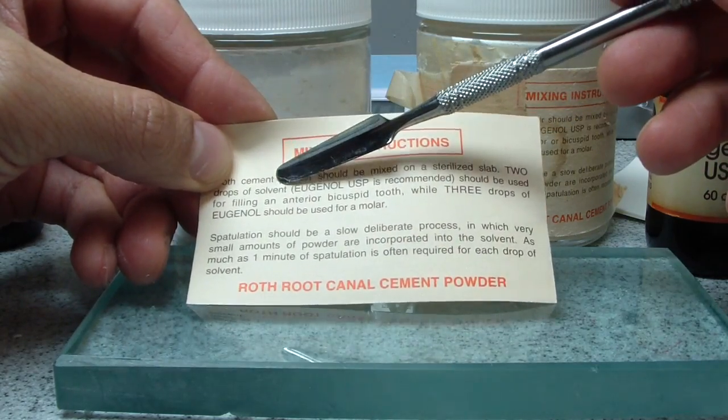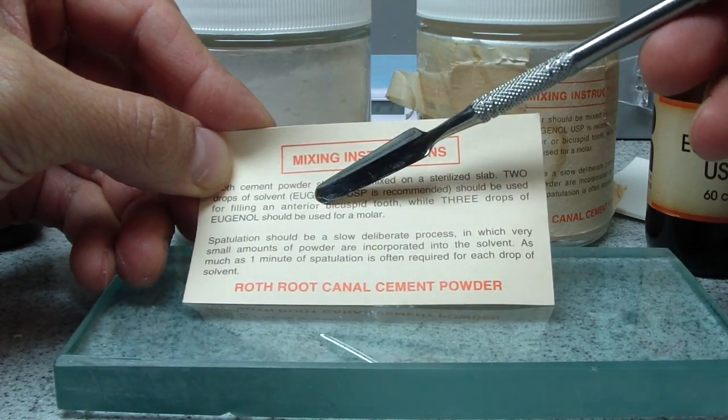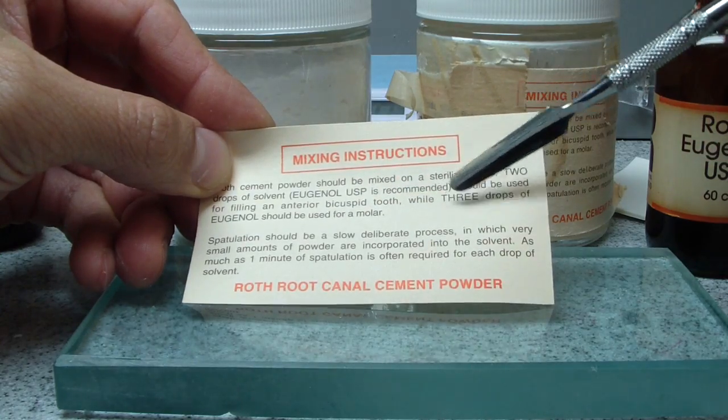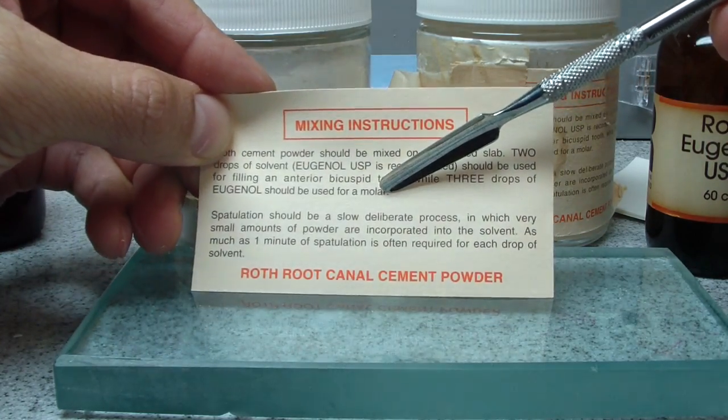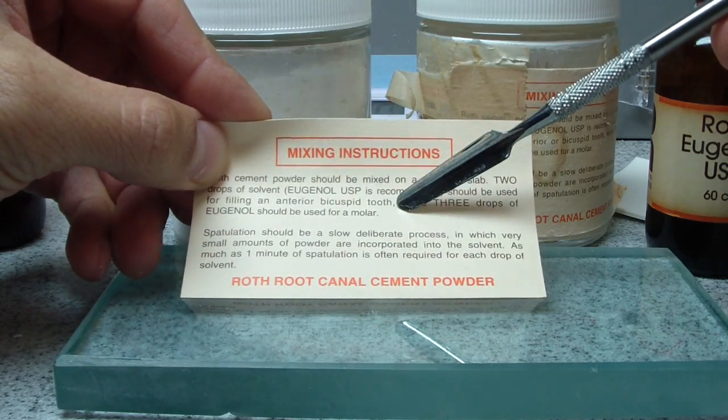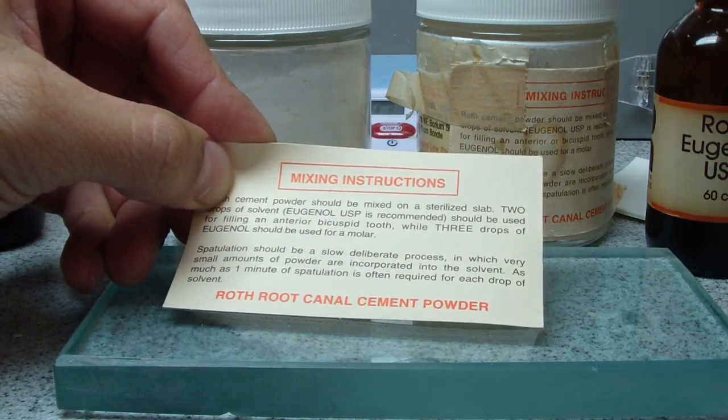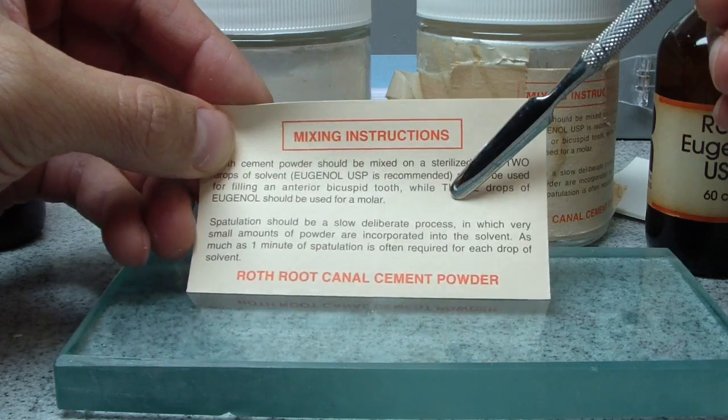So it's just a little tip. I mean, I guess it has some applicability to endo. So, take two drops of solvent, of eugenol, for filling an anterior bicuspid tooth, while three drops for a molar. Not sure—it doesn't say whether or not this is for lateral condensation.